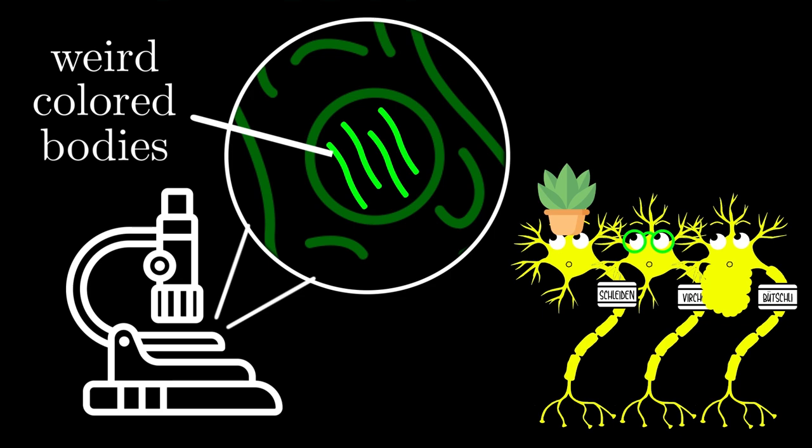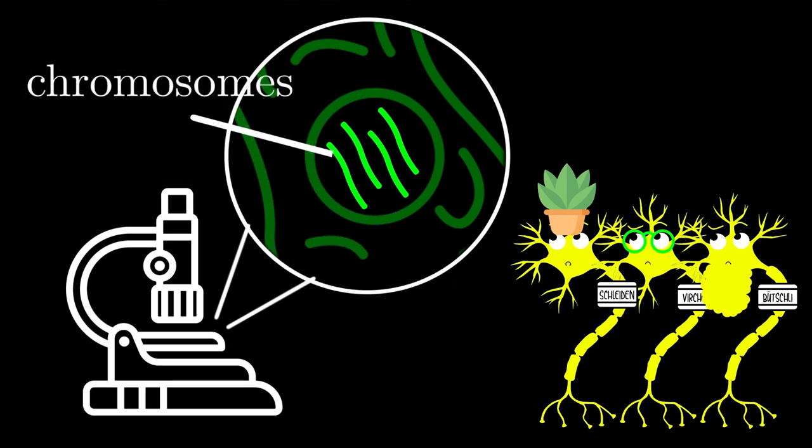They had no clue what these were. So naturally, these scientists went, I've discovered something new. And in science, when you've discovered a new thing, you tend to want to give that thing a name. And as you'll come to learn, scientists are rather uncreative when it comes to naming things. It turns out that in Greek, the word color is chroma, and body is soma. So these colored things were named chromosomes, literally meaning colored bodies.